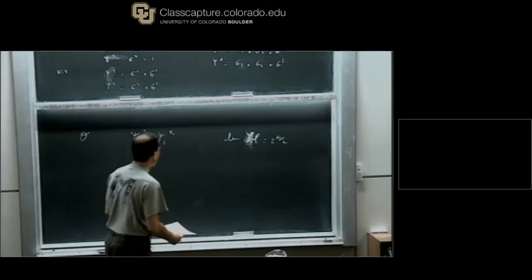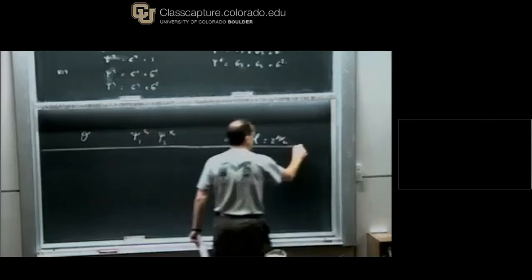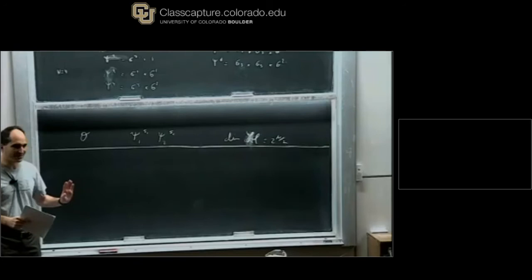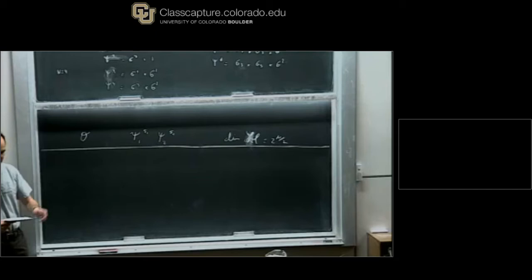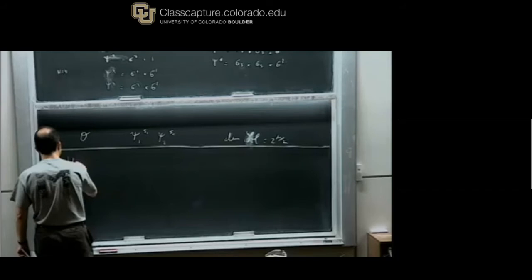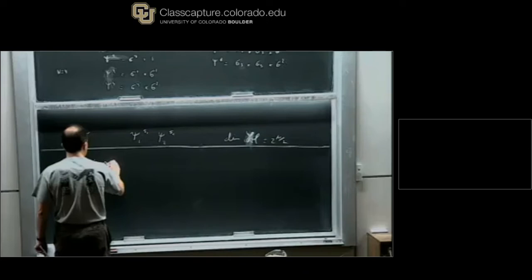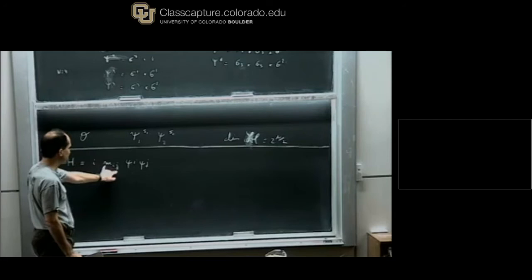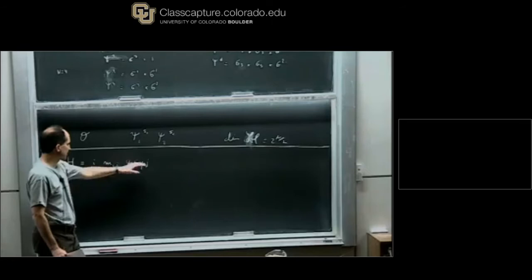I'm going to first talk about a simpler model — almost a free theory — that has one interesting feature. This is a side comment, not about SYK. We choose a Hamiltonian H = i M_{ij} Psi_i Psi_j, a generic quadratic Hamiltonian where M is an anti-symmetric matrix, and the factor of i makes the Hamiltonian Hermitian.